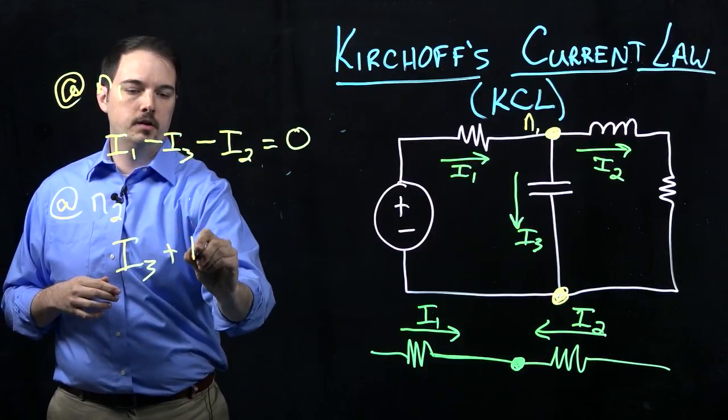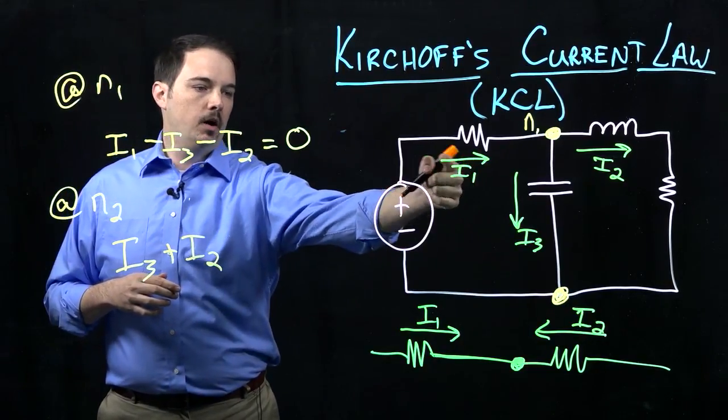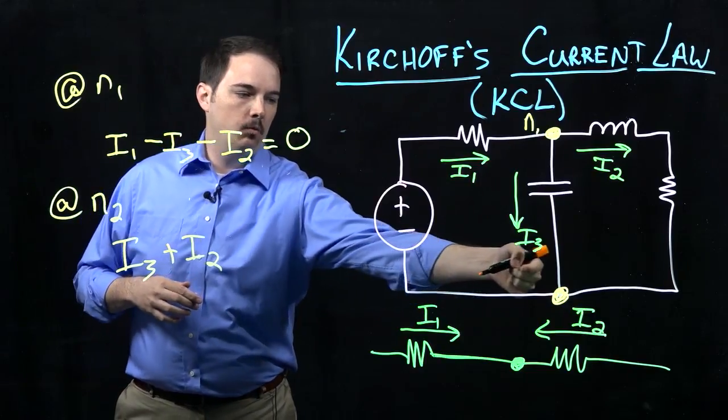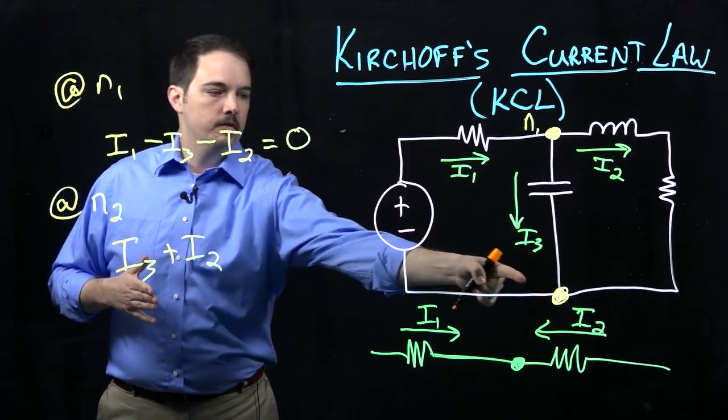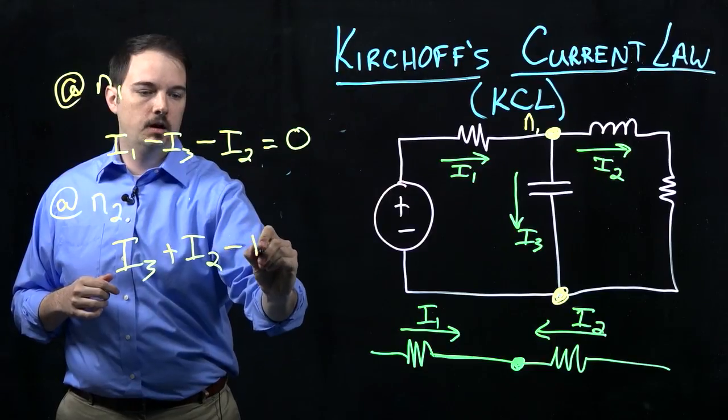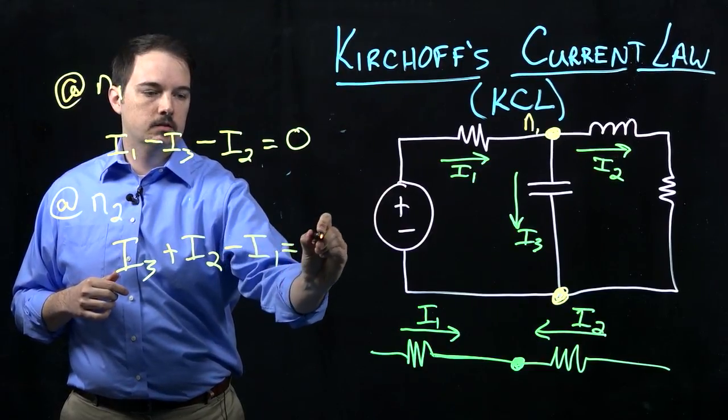And then if I follow I1, I see that I1 is coming out of this node N2 here, so that would be minus I1. Again, that has to sum to zero.